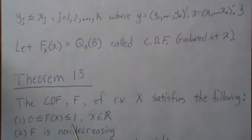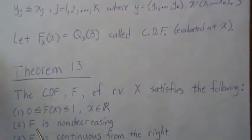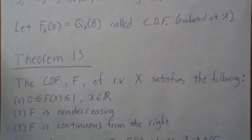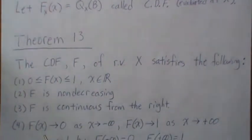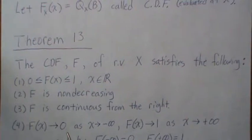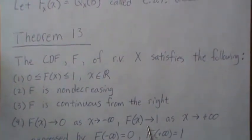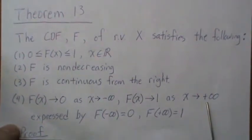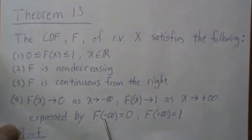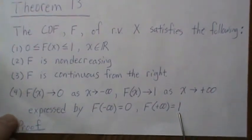It's always between zero and one for all real numbers. F is non-decreasing. F is continuous from the right. F of x approaches zero as x goes to negative infinity, and it approaches one as x goes to positive infinity. These are expressed as F of minus infinity equals zero and F of positive infinity equals one. So let's look at the proofs of these.